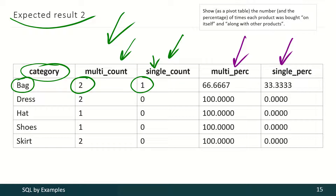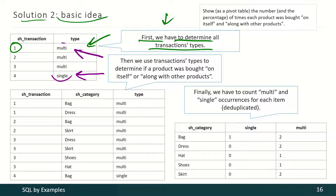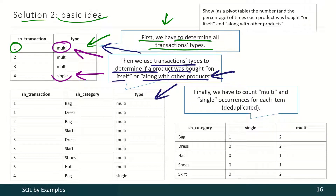These columns are produced via mathematical calculations based on those values. The basic idea for this solution is: first we have to determine all transaction types — for each transaction we calculate how many categories of products were in it. If there was only one product category, that's a single transaction; otherwise it's a multi-transaction. Then we use these transaction types to determine if a product was bought on itself or along with other categories. Finally we have to count multi and single occurrences for each item, deduplicated.